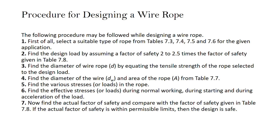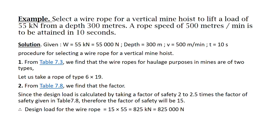Then the diameter of the wire rope is calculated by equating its tensile strength to the design load. The diameter of the wire and area of the rope are calculated with expressions given in table 7.7. After that, the various stresses in the rope are found, and the effective stresses during normal working, during starting, and during acceleration of the load are calculated. The factor of safety is then calculated and compared with table 7.8. If the factor of safety is within the permissible limit, the design is safe.